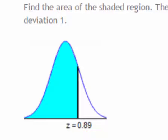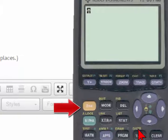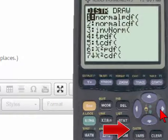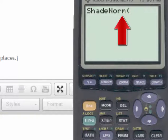Here we have a standard normal distribution where we're asked to find an area below a z-score of 0.89. We'll do this first by shading the area, and to do that we'll use the second distribution button, going to the draw menu and selecting shade normal.